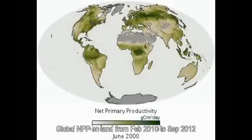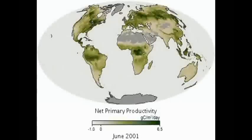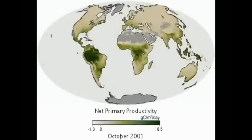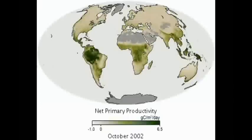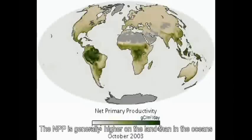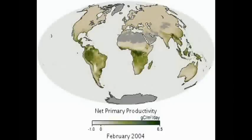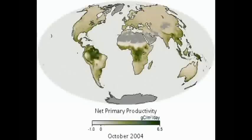This slide shows the global NPP on land from February 2010 to September 2012. The dark green areas show the high levels of NPP. You can see that NPP is highest at the equator, where there is the most direct sunlight and plant life.